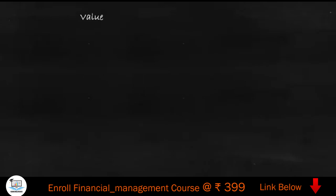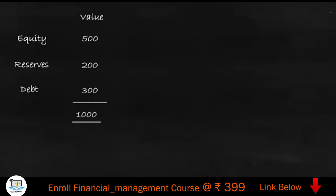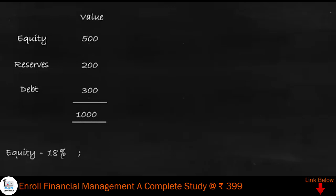First, I'll list out the sources of funds. The first source is equity — we are going to get 500 from equity, from reserves 200, and from debt it is 300. So totally the funds mobilized is 1000, and these funds will have a cost. Equity has a cost of 18 percent, and debt has a cost of 10 percent.